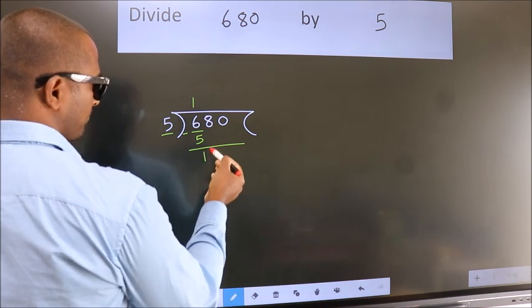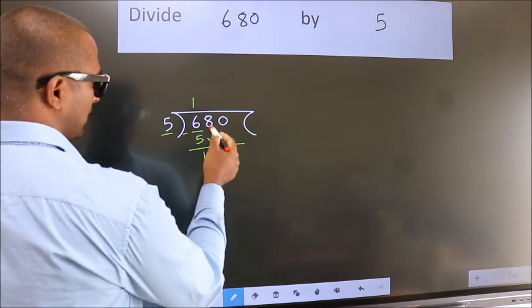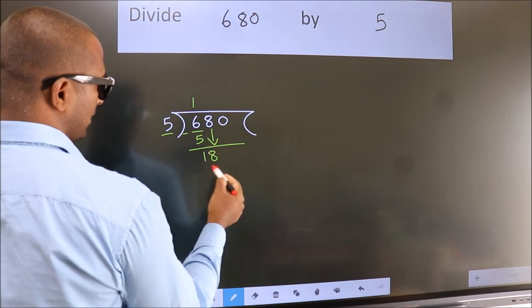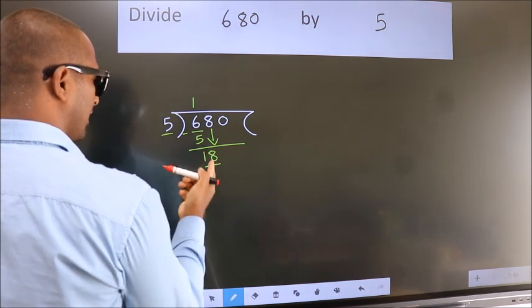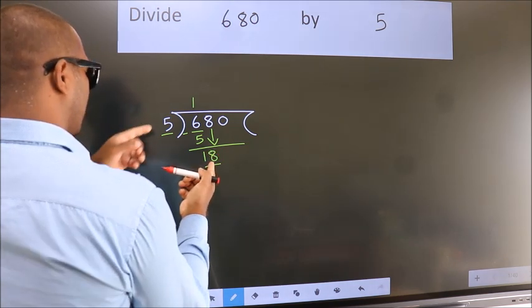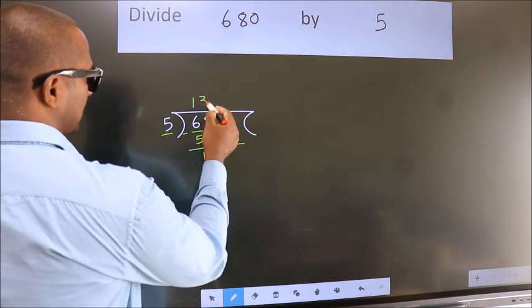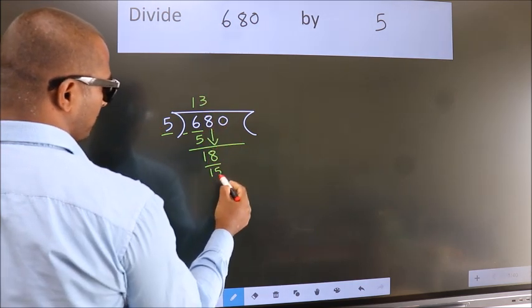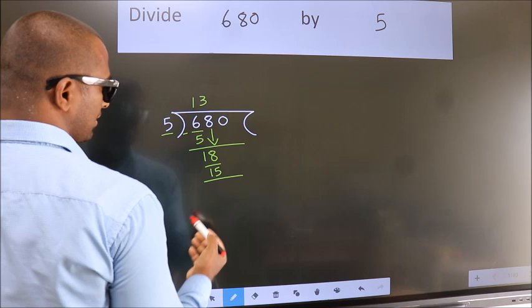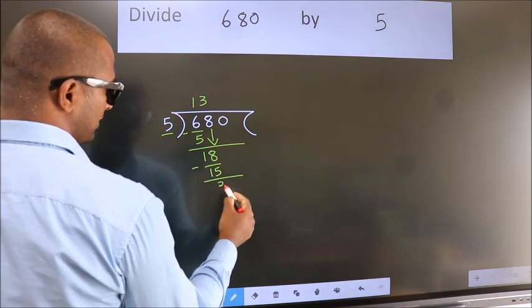After this, bring down the beside number. So 8 down. So 18. A number close to 18 in 5 table is 5 threes 15. Now we subtract. We get 3.